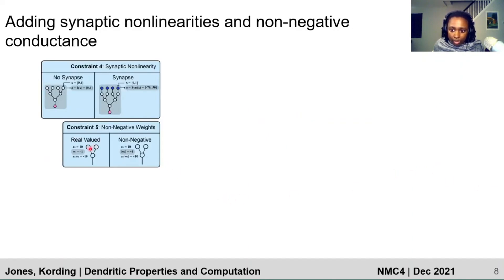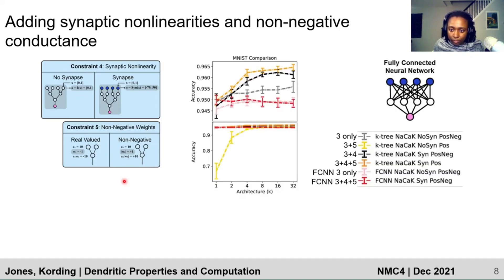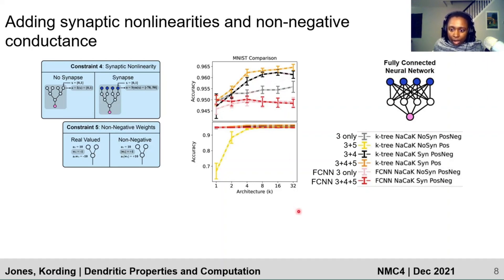Next, we added two more constraints — synaptic nonlinearity and nonnegative conductance weights — on top of the dendritic nonlinearity constraint in both our neuron-like model and the FCNN model. Adding nonnegative conductance, shown in the bottom graph in yellow, led to a major drop in performance, but this was rescued in orange by adding synaptic nonlinearity. Both constraints together in orange perform better than adding synaptic nonlinearity alone in black. Our takeaway is that with added synaptic repetitions, all neuron-like models perform better than the comparable FCNNs, shown in red and pink.